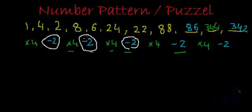So what is this series? The series is 1, 4, 2, 8, 6, 24, 22, 88. And we have recently found 3 new members of the series. They are 86, 344, and 342. So this is how we have found out the series.